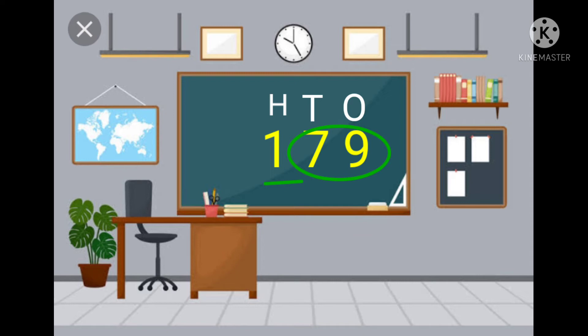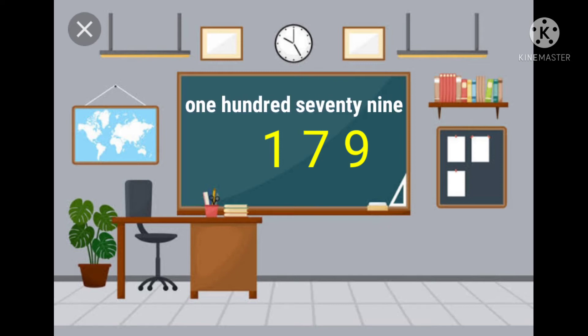Here, one is in the hundreds place, seven is in the tens place, and nine is in the ones place. How will we read it? We read the hundreds first: one hundred. Then we read the last two digits together: seventy-nine. One hundred seventy-nine. We can write it as one hundred seventy-nine.